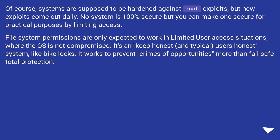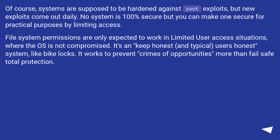Of course, systems are supposed to be hardened against root exploits, but new exploits come out daily. No system is 100% secure, but you can make one secure for practical purposes by limiting access. File system permissions are only expected to work in limited user access situations where the OS is not compromised. It keeps honest and typical users honest — like bike locks. It works to prevent crimes of opportunity more than as a fail-safe total protection.